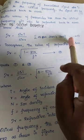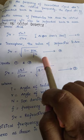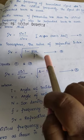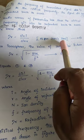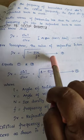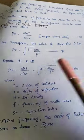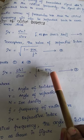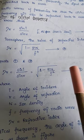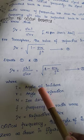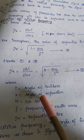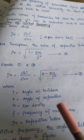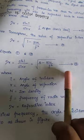We are now going to equate the first and second equations to derive the critical frequency. Equating Snell's law to the refractive index: eta_r = sin(i) / sin(r) = square root of (1 minus 81n / f²). Here, i is the angle of incidence, r is the angle of refraction, n is the ion density, f is the frequency of the radio wave, and eta_r is the refractive index.